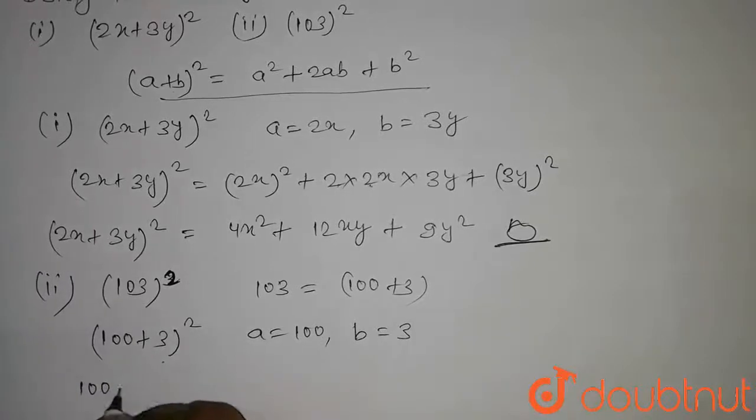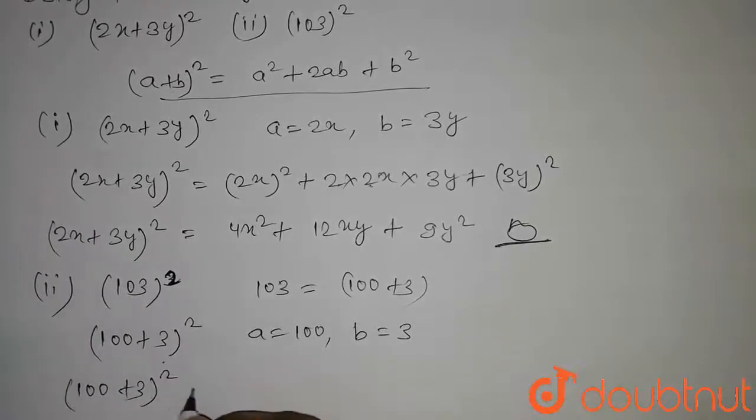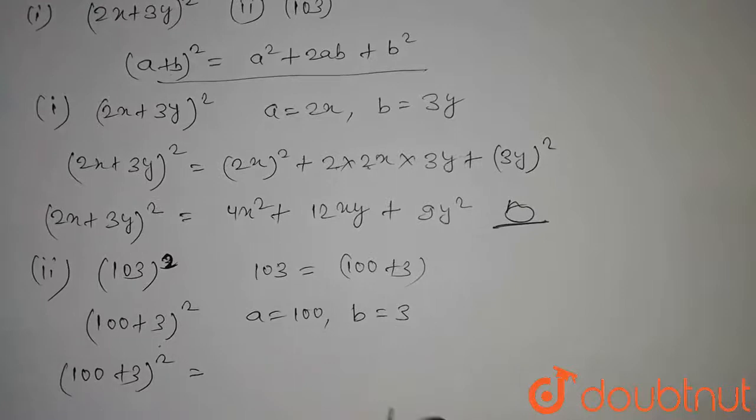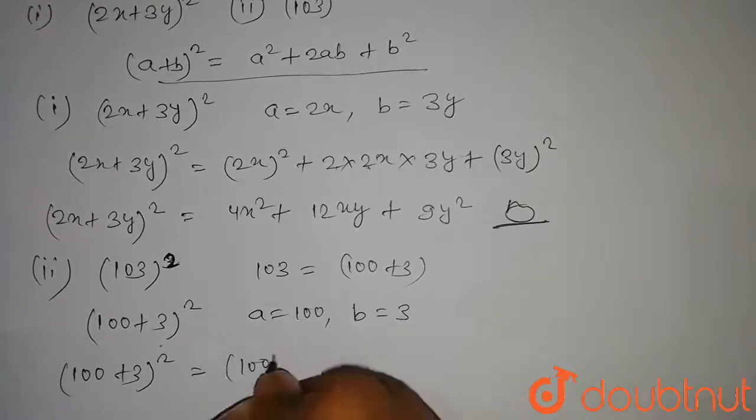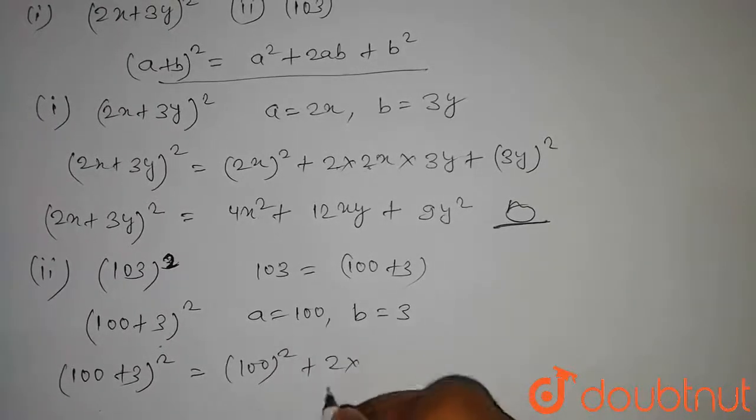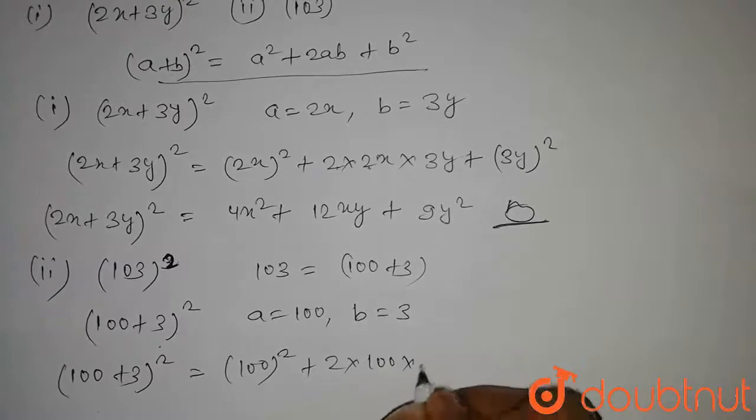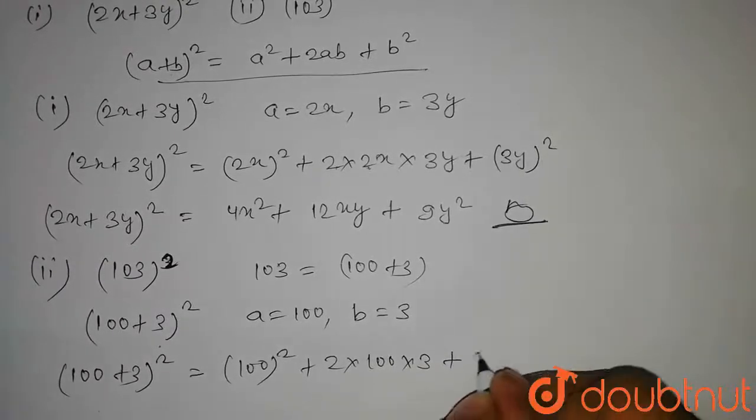(100 + 3)² whole square will be equal to 100² plus 2 into 100 into 3 plus 3².